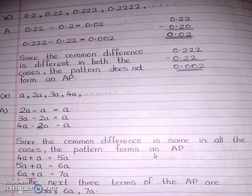You have one more part — find the next three terms. The last term is 4A, and adding the common difference A gives 5A. Then 5A plus A equals 6A, and 6A plus A equals 7A. Therefore, the next three terms of the AP are 5A, 6A, and 7A.